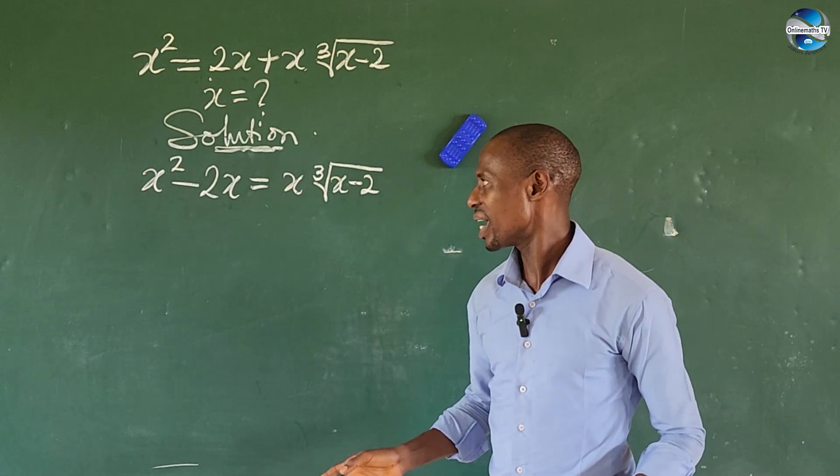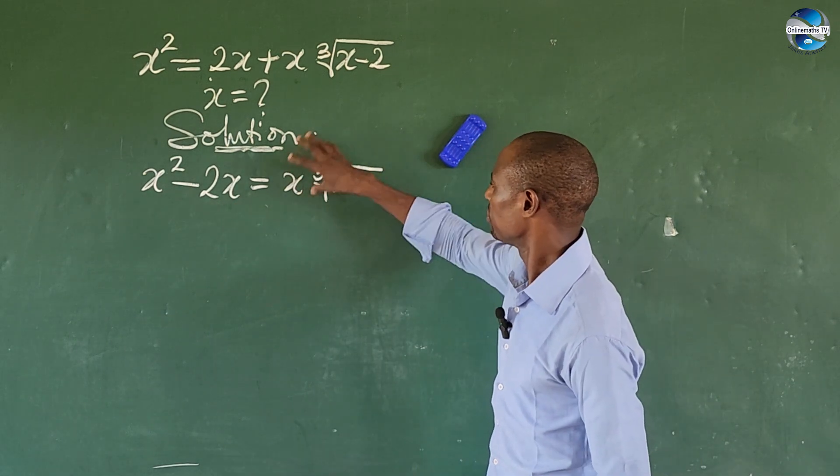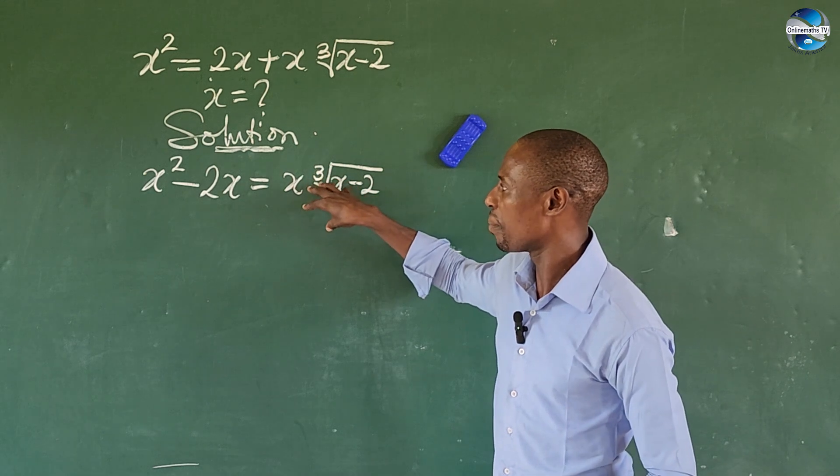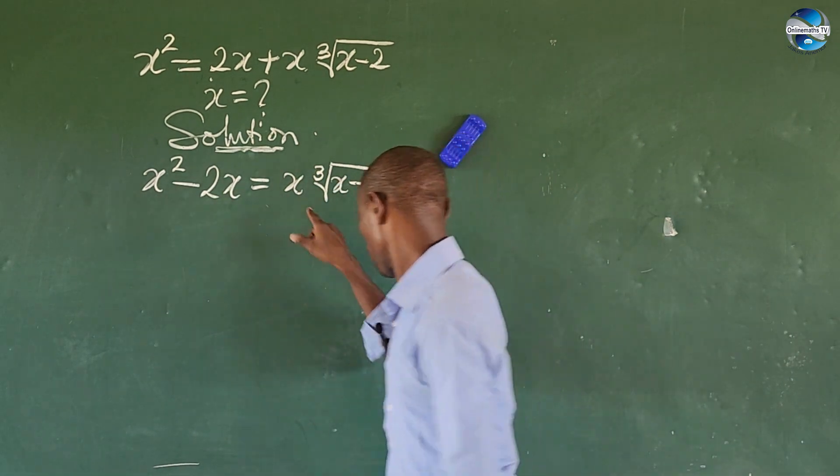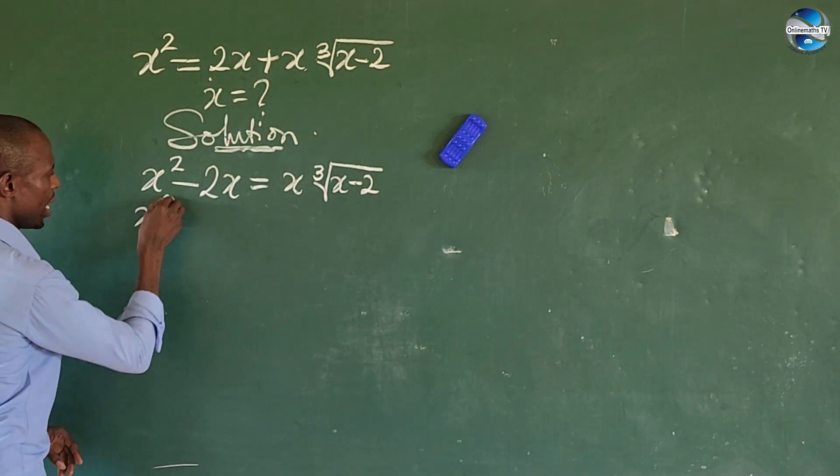So what do we do here? Instead of taking the cube of both sides, I will factor x out here because we also have x here.